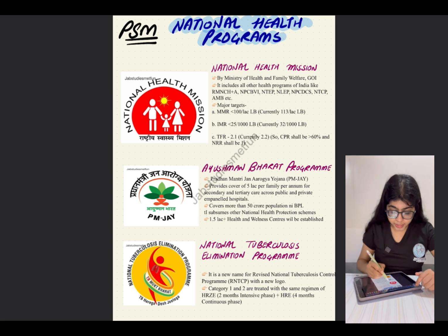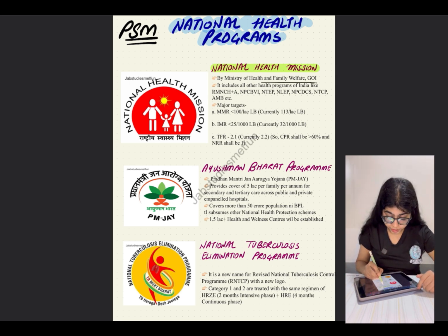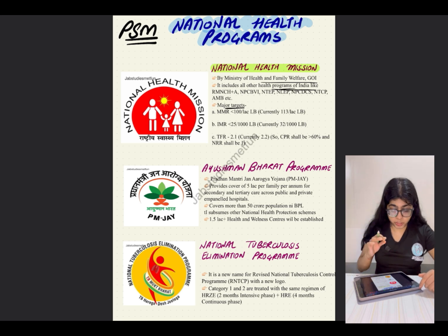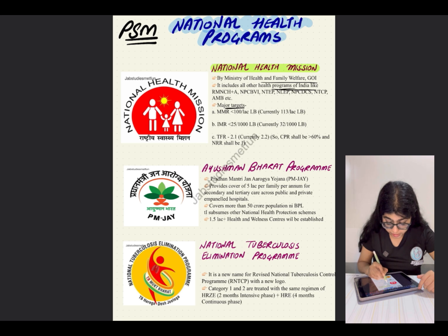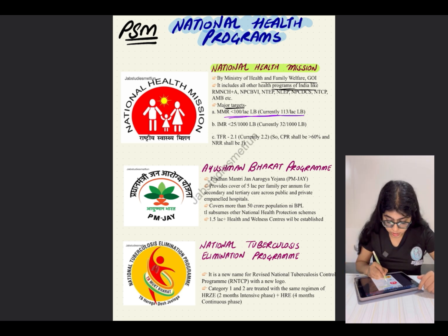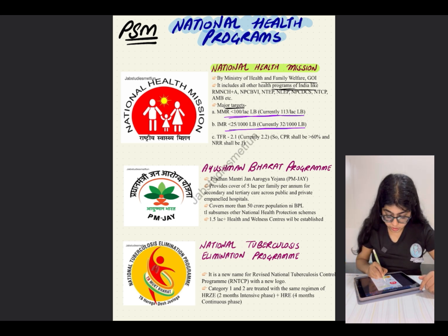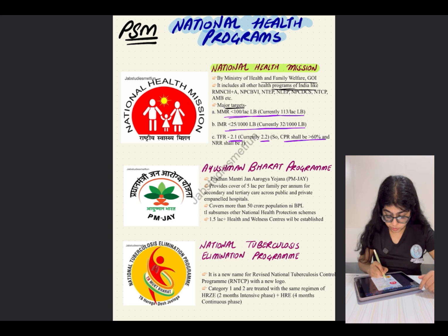The National Health Mission is given by the Ministry of Health and Family Welfare, Government of India, and includes all other health programs. The major targets are: maternal mortality rate less than 100 per lakh live births (currently 113), infant mortality rate less than 25 per 1000 live births (currently 32), and total fertility rate of 2.1 (currently 2.2). The couple protection rate shall be more than 60% and the net reproductive rate shall be 1.